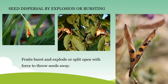Seed dispersal by explosion or bursting. Some fruits burst to throw seeds out with some speed so that they can fall on the ground at a little distance away from the parent plant and grow into new plants. This kind of dispersal is observed in peas, lady's finger, mustard, and balsam. Some fruits also split open to throw the seeds away from them so that they can grow into new plants.